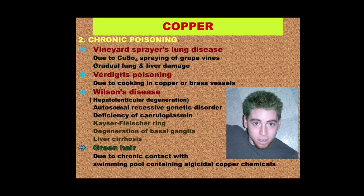When swimming pools are prone to algal contamination, copper chemicals — usually copper sulfate — are used to prevent it. When there is excess copper sulfate in the swimming pool water and somebody swims in it, especially for a prolonged period of time, the hair can become greenish or slightly bluish in color. If such swimming is done over a period of time, the hair can gradually discolor, as shown in the image here.